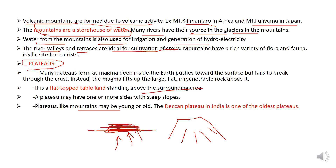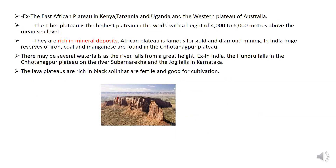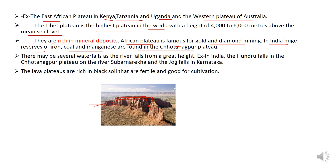Plateaus, like mountains, may be young or old. The Deccan Plateau in India is one of the oldest plateaus. Examples include the East African Plateau in Kenya, Tanzania, and Uganda, and the Western Plateau of Australia. The Tibetan Plateau is the highest plateau in the world, at a height of 4,000 to 6,000 meters above sea level. Plateaus are rich in mineral deposits — the African Plateau is famous for gold and diamond mining. In India, huge reserves of iron, coal, and manganese are found in the Chota Nagpur Plateau. There may be several waterfalls where rivers fall from a great height — for example, Hundru Falls in the Chota Nagpur Plateau on the river Subarnarekha, and Jog Falls in Karnataka. Lava plateaus are rich in black soil, which is fertile and good for cultivation.